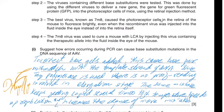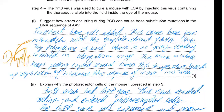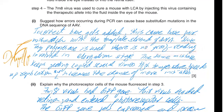Step four: the 7M8 virus was used to cure mice with LCA by injecting this virus containing the therapeutic allele into the fluid inside the eye. Errors occurring during PCR cause base substitution mutations because Taq polymerase — not the cell's own DNA polymerase — is used, and Taq polymerase has no proofreading mechanism. When an incorrect base is added, there is no correction.